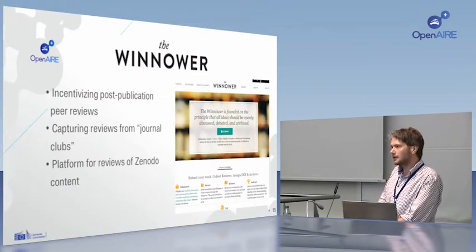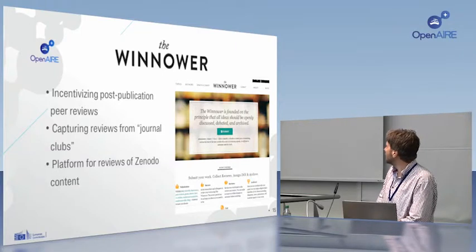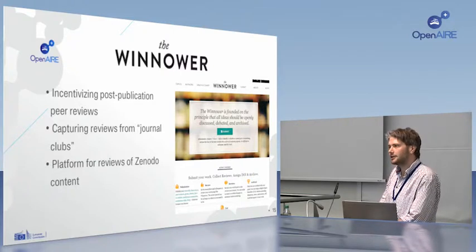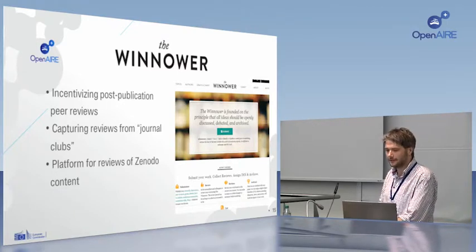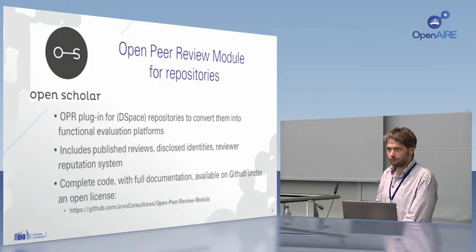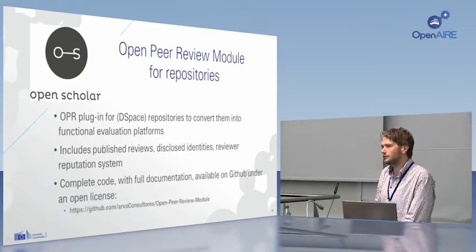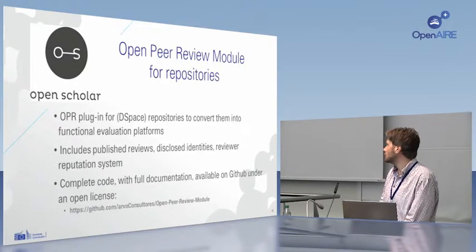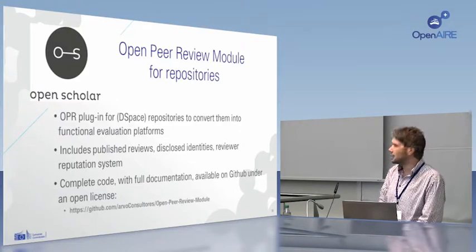The result of a technical call we held was Josh Nicholson — we have Josh here and he'll speak shortly. Josh runs the Winnower, an open access journal for grey literature. The experiment there was to try to incentivize post-publication peer review, specifically journal club reviews, and to provide a platform for reviews for repository content generally and Zenodo content specifically. Finally, Open Scholar — Pandelis is here and will be on the panel later. They produced an open peer review module plugin for DSpace repositories, which can be added to an institutional or subject repository to make it into a functional evaluation platform. It includes published reviews, disclosed identities, and a reviewer reputation system, with the complete code open source on GitHub.